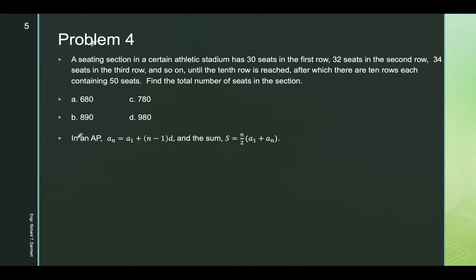In arithmetic progression, the Nth number equals the first number A1 plus N minus 1 multiplied by D, where D is the common difference. The sum of the arithmetic progression is given by N over 2 times the sum of the first and Nth numbers.